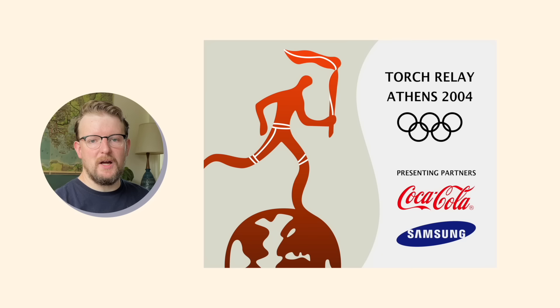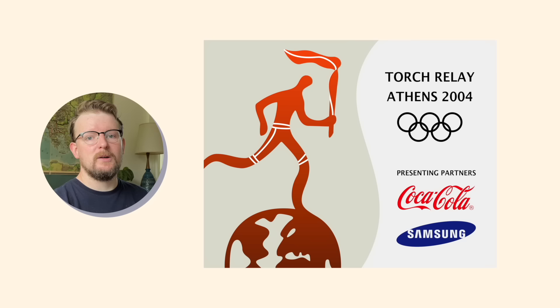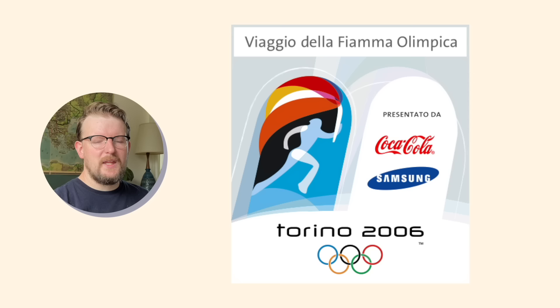2004, Athens. Hey, the torch relay is allowed to have sponsors — so that's interesting. This is a real break from the other Athens branding, but you know what, I dig it. Normally the torch leaves Athens and goes to the host city, but since Athens was the host city, they actually did a world tour, which was very popular at the time. The fact that the runner is running around a globe is a good thing to get across in this particular logo.